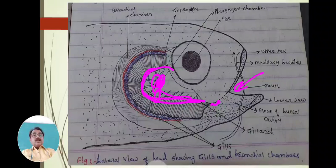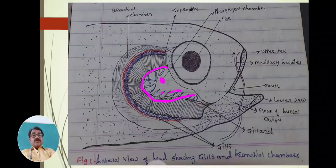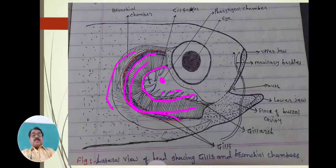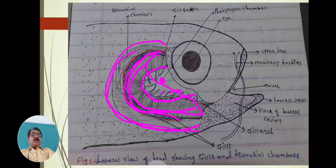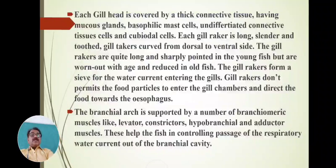On the gill arch, these pointed structures are the gill rakers. On the gill arch, gill lamellae are formed broadly. These gill lamellae take part in the formation of gaseous exchange. Inside this branchial or gill chamber, four gills are present, and these gills take part in active respiration. Gaseous exchange occurs in this fish through these structures.